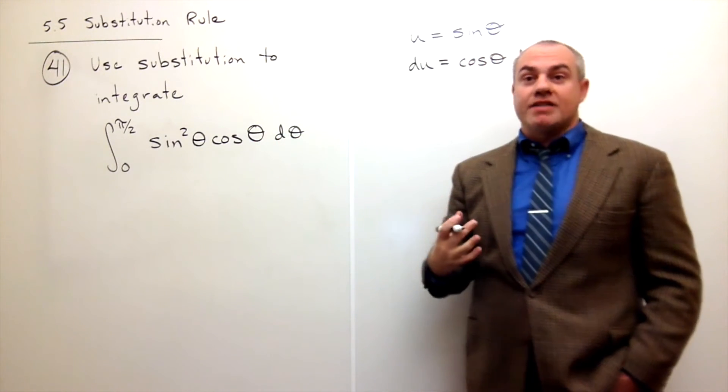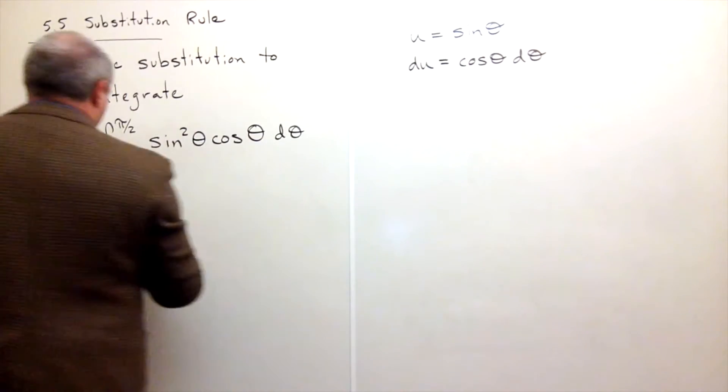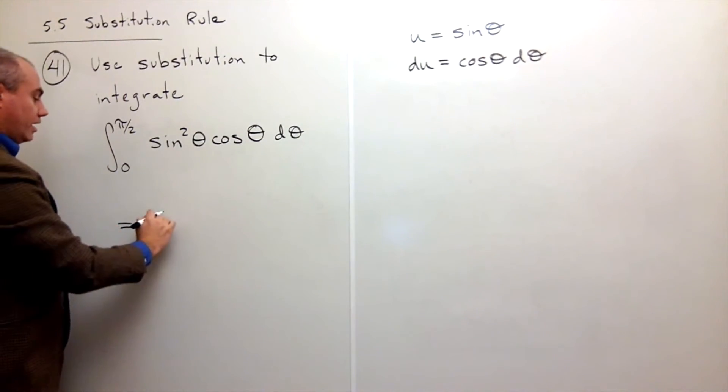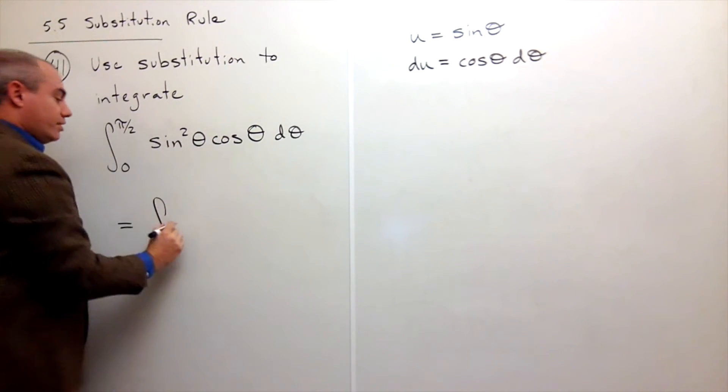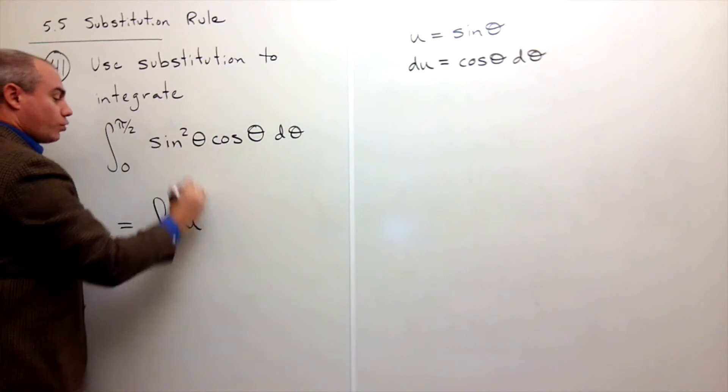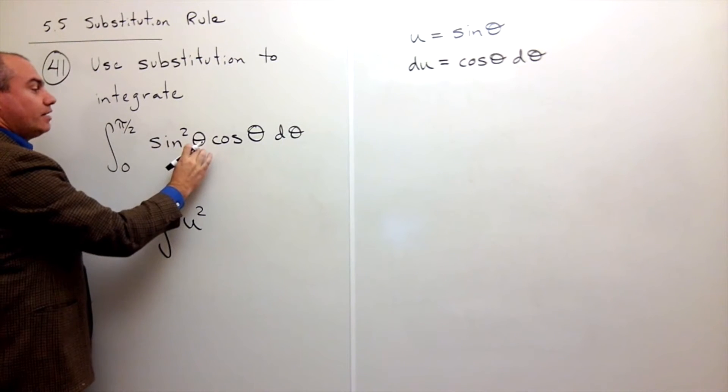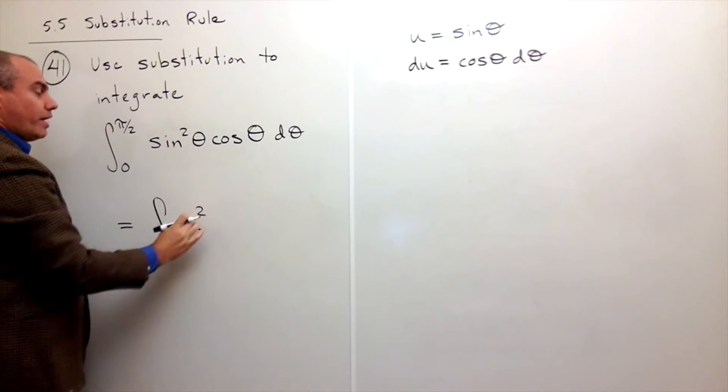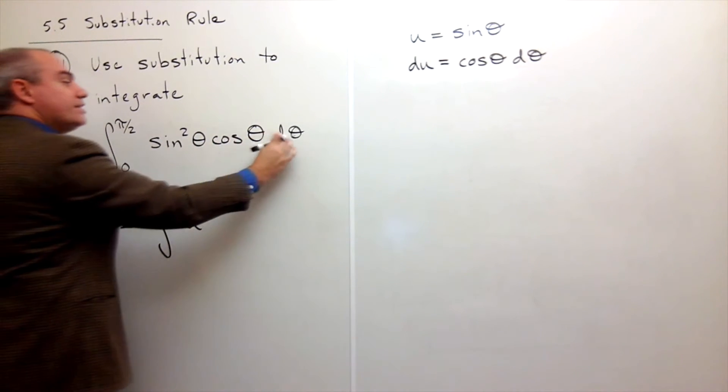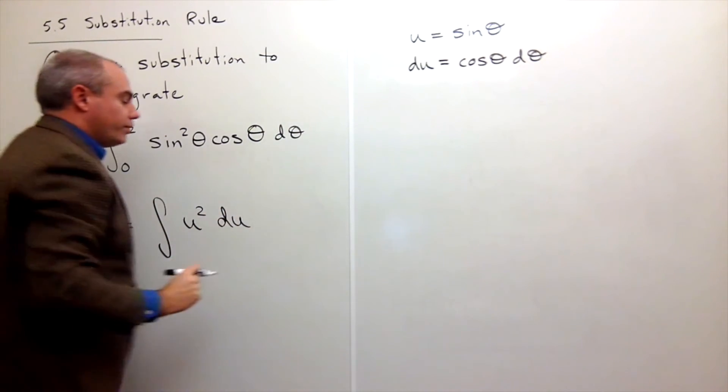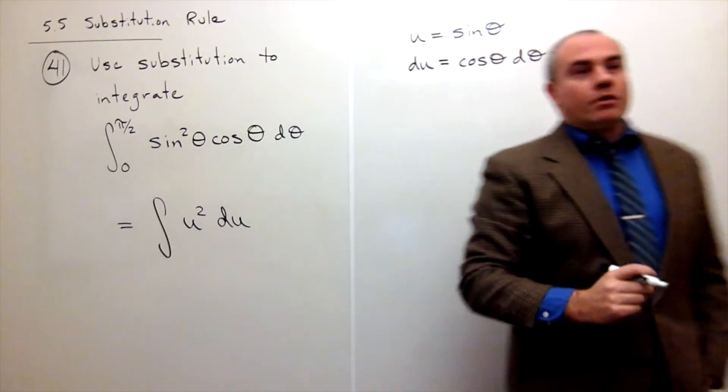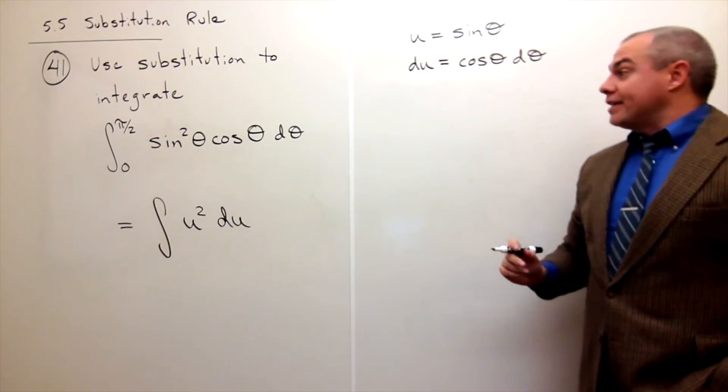Now I can make a nice substitution and I get the integral of, well sine is u, so I just get u squared because I have sine of theta squared. So u squared and cosine theta d theta. Cosine theta d theta is all du. So I'm halfway there.